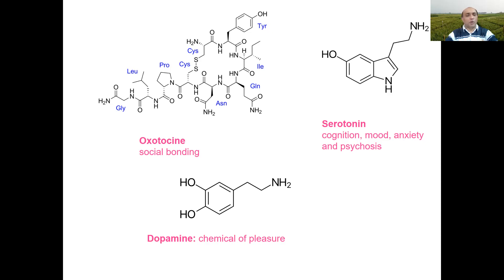There are three very important metabolites: the first is oxytocin, a peptide neuro-stimulating peptide; the other two are serotonin, an amine, and dopamine. These three chemicals are very critical and important for social bonding, cognition, mood, anxiety or psychosis, and also chemical pleasure. Some people call them 'love hormones,' and their role as physiologically active neuro-modulating compounds is very complex.